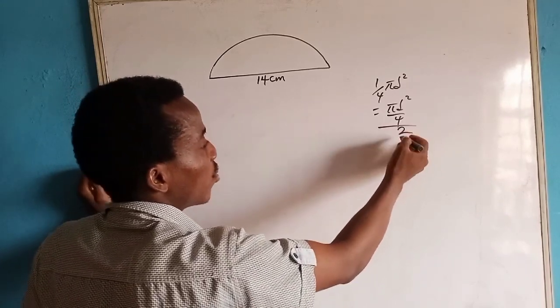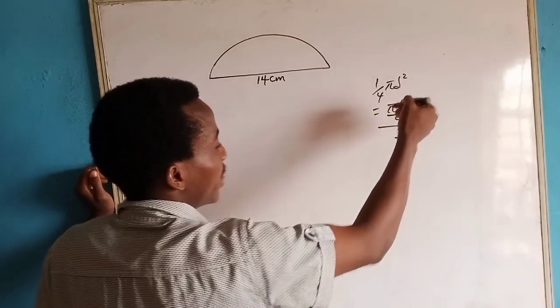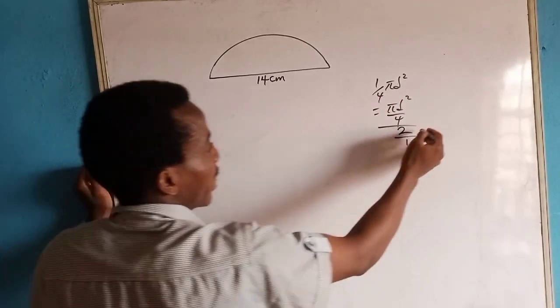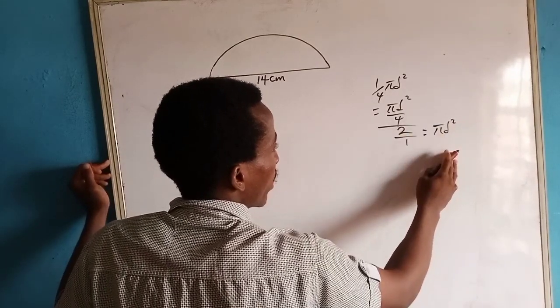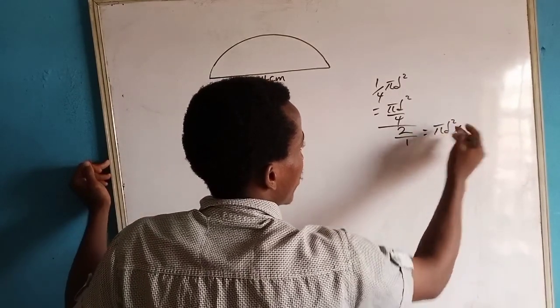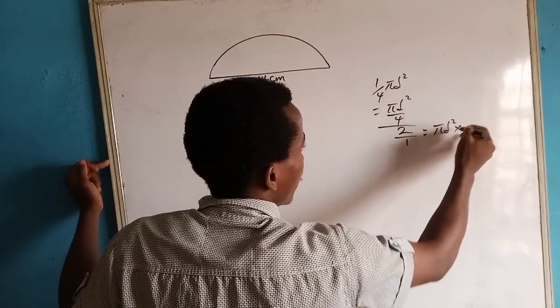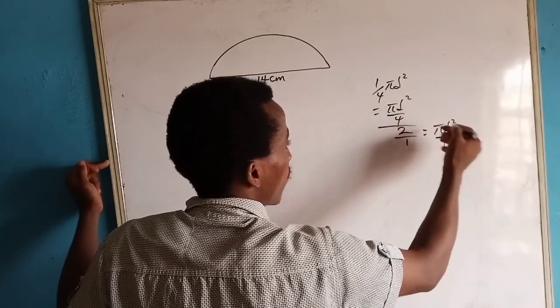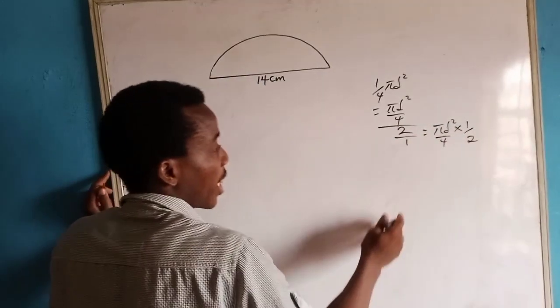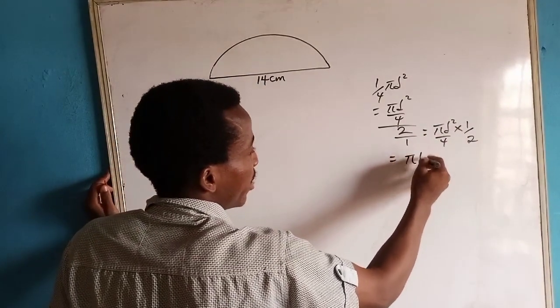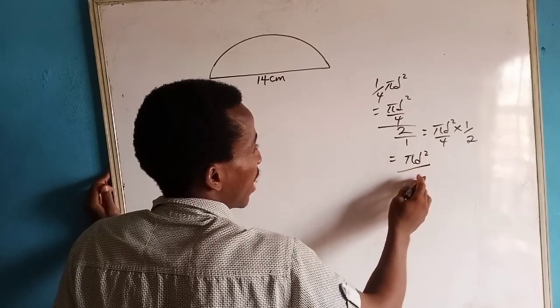Dividing this by 2 is just like writing 2 over 1. So I need to flip this. I would then have something like π d squared times, if this flips up, we have times 1 over 2. So I would then have this to be π d squared over 8.